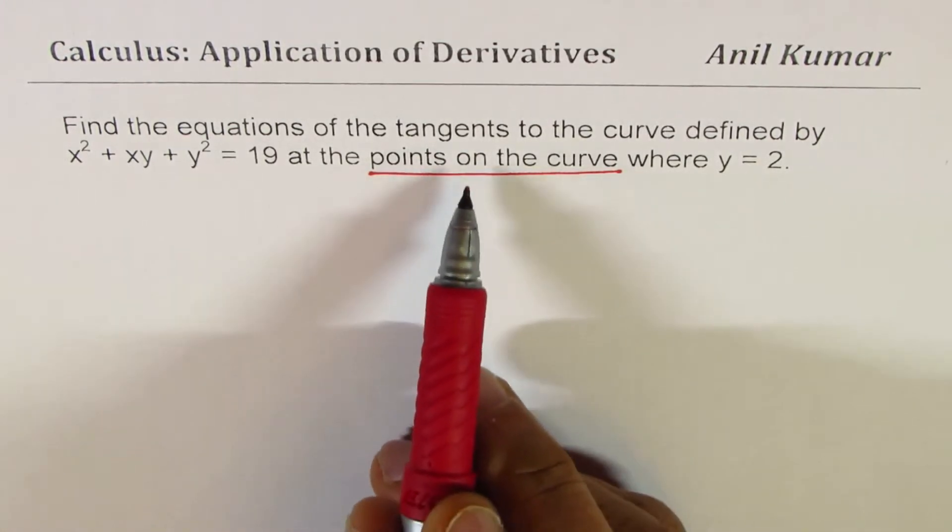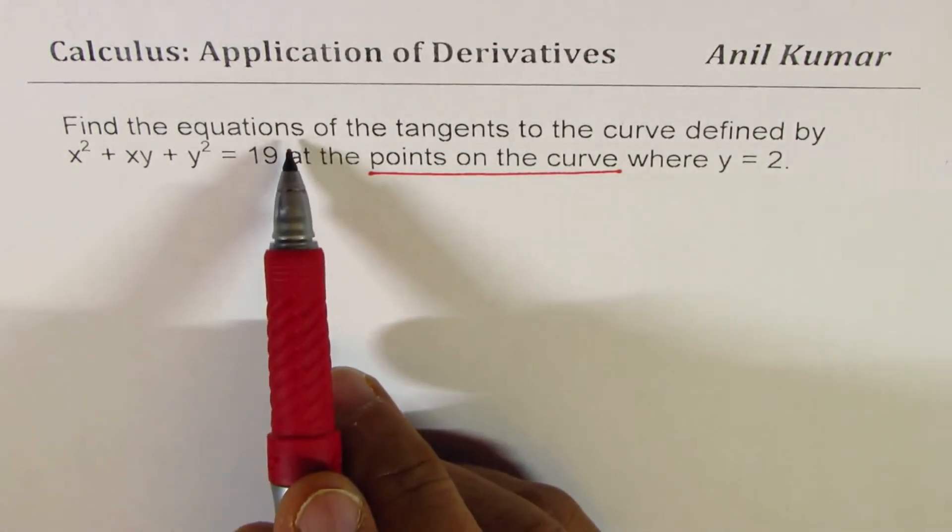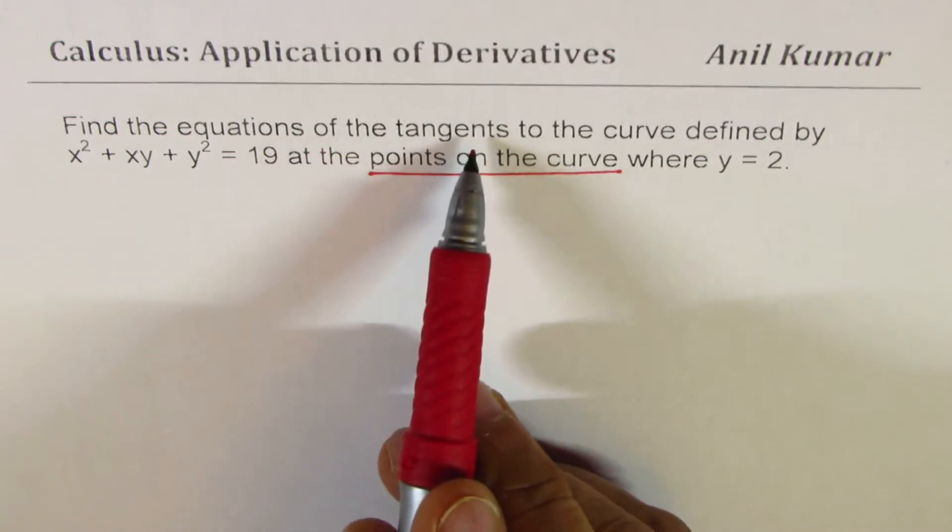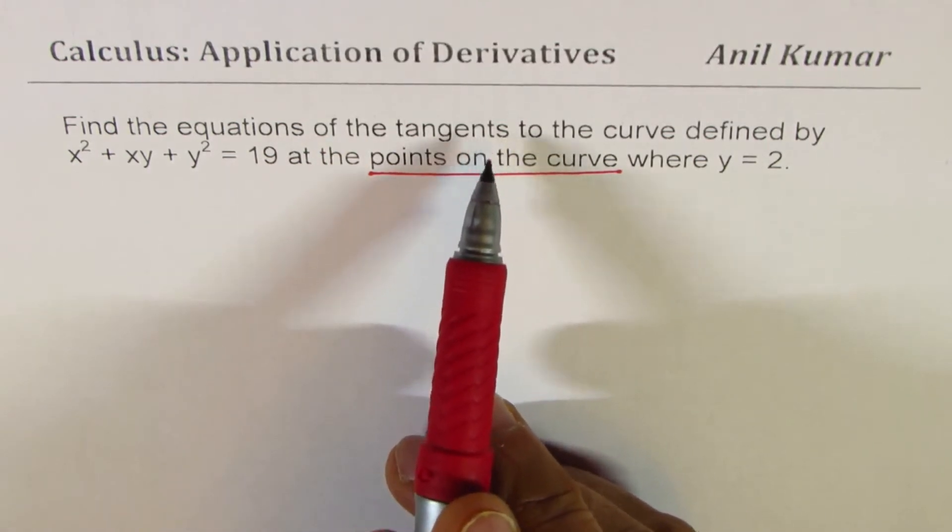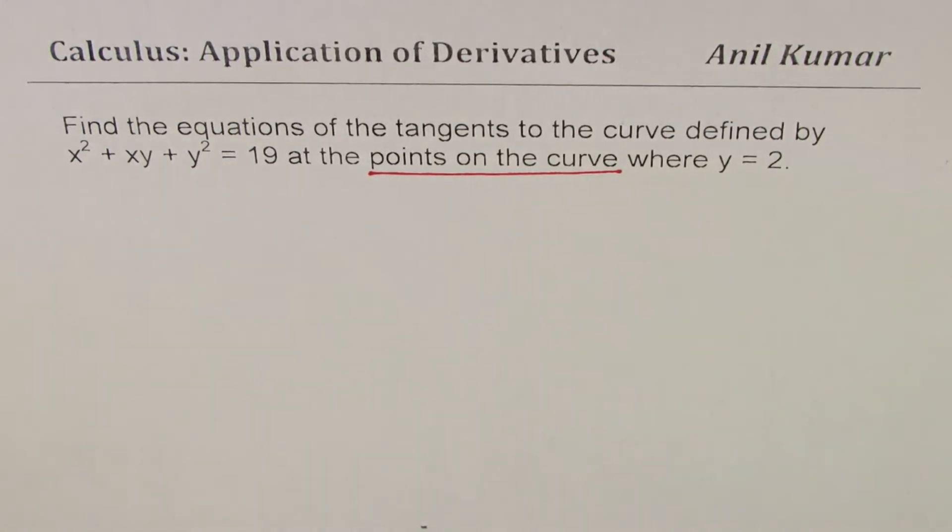These points are on the curve, however, we need to find equations of tangents, that is, you can expect to have more than one tangent. You will realize that the equation given does not represent a function. So therefore, two tangents are possible. It is a relation.